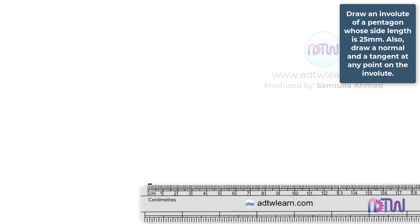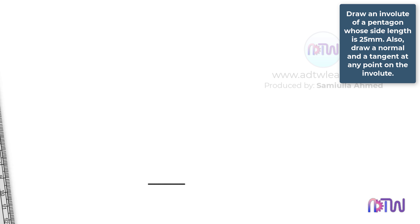First, we will have to draw a pentagon whose side length is 25 mm. Take a ruler and draw a horizontal line of 25 mm in length. Mark these endpoints as A and B.